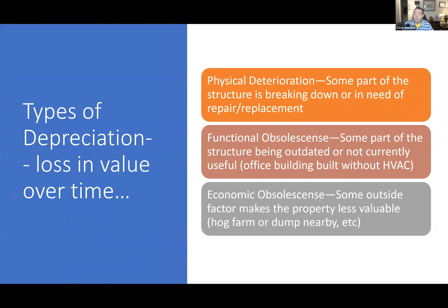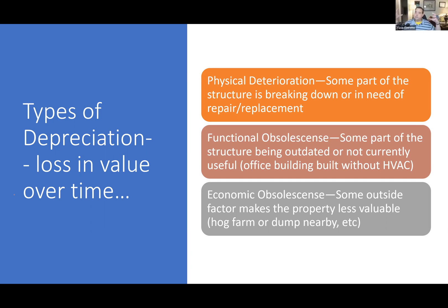There are three different types of depreciation. The first is called physical deterioration — this means the structure itself is breaking down: things are broken, things need to be repaired. This is a maintenance issue. It can be very minor or super severe — needing paint is an example of physical deterioration; a crumbling foundation is also an example of physical deterioration.